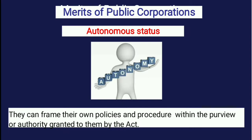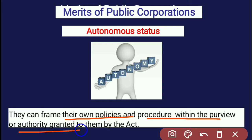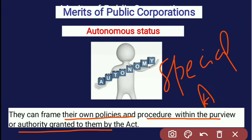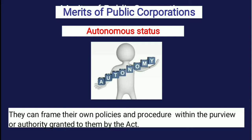Next is autonomous status. A public corporation is set up by passing a special act in parliament or the state assembly. They can frame their own policies and procedures within the preview of authority granted to them by that special act. Public corporations have this autonomous status.